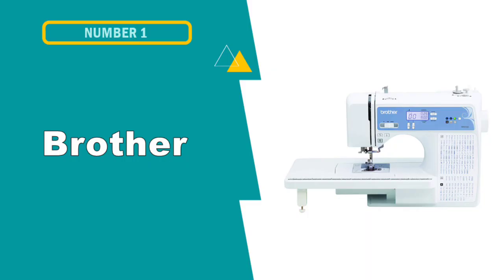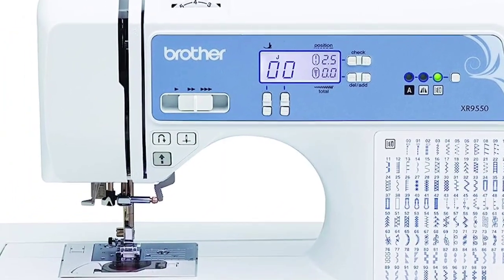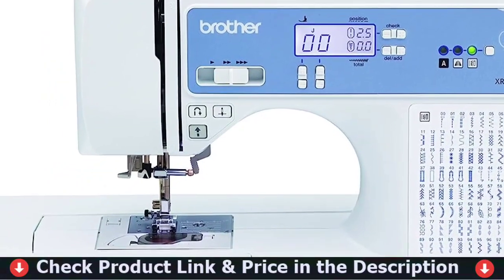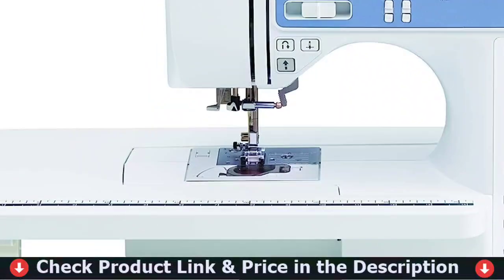Our first pick is Brother Sewing and Quilting Machine. The Brother XR9550 Computerized Machine includes 110 built-in utility, decorative and heirloom stitches including 8 styles of autosized buttonholes, plus 55 alphanumeric sewing stitches.